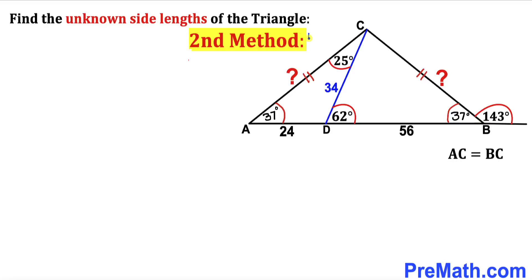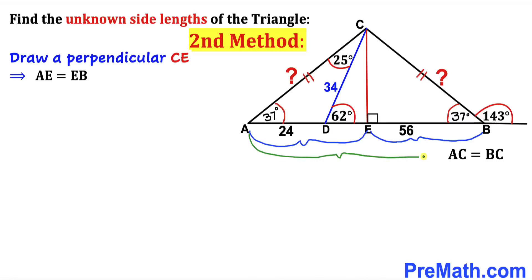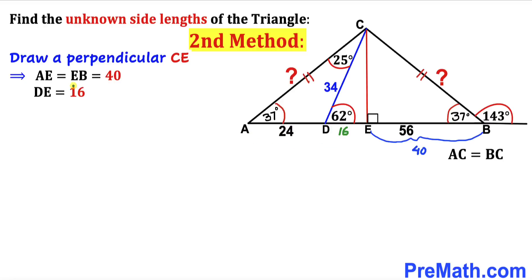Now let's look at the second method. We draw a perpendicular CE. Since triangle ABC is isosceles, AB equals 24 plus 56 equals 80 units, so AE equals 40 units and EB equals 40 units. Since AD is 24 units and AE is 40 units, DE equals 40 minus 24, which gives us 16 units.